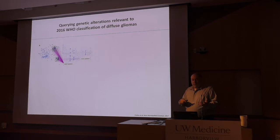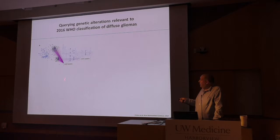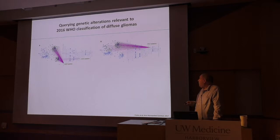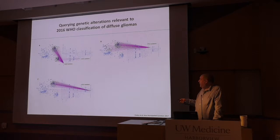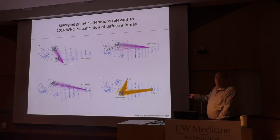The WHO incorporated 1p/19q co-deletion, IDH status, and TP53. Mapping IDH1 or IDH2 mutations shows the split — IDH mutant tumors are in specific regions. IDH is the biggest splitter. TP53 mutations are mostly in one cluster with some in the upper cluster. ATRX has a similar profile. 1p/19q co-deletion is all in one cluster. So we get: IDH mutation with 1p/19q co-deletion, IDH mutation alone, and IDH wild-type.